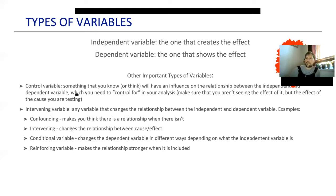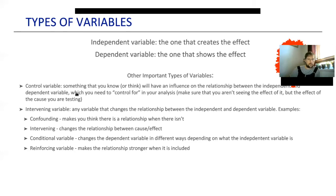There are other types of variables that are important to keep in mind. For instance, I used to work in child welfare and we'd evaluate programs. We were curious whether giving children in foster homes therapy would impact outcomes. The dependent variable that we want is happiness, and the independent variable is providing therapy. How much happiness does that create? Is it worth the money invested?